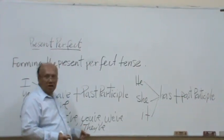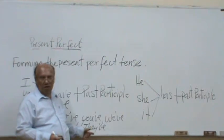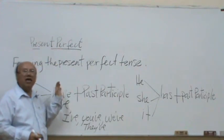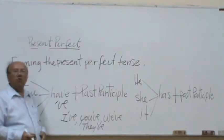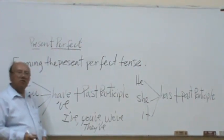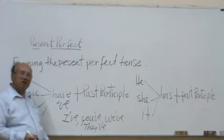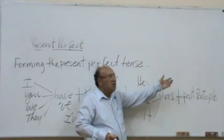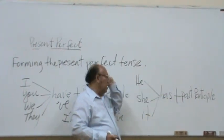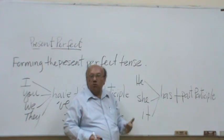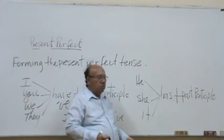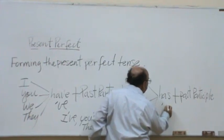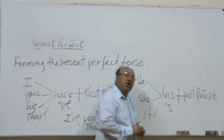For writing, informal English, use the complete form, I have. I have spoken. I've spoken is better in communication. Now, let's continue with he has, past participle. Has can also be contracted.